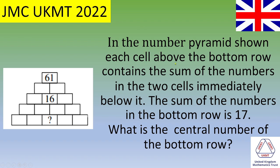In the number pyramid shown, each cell above the bottom row contains the sum of the numbers in the two cells immediately below it. The sum of the numbers in the bottom row is 17. What is the central number of the bottom row? So if you want to give a try, please pause the video. Otherwise, the solution is now.